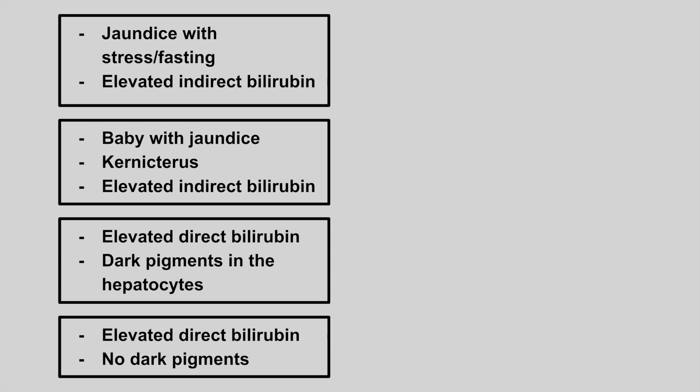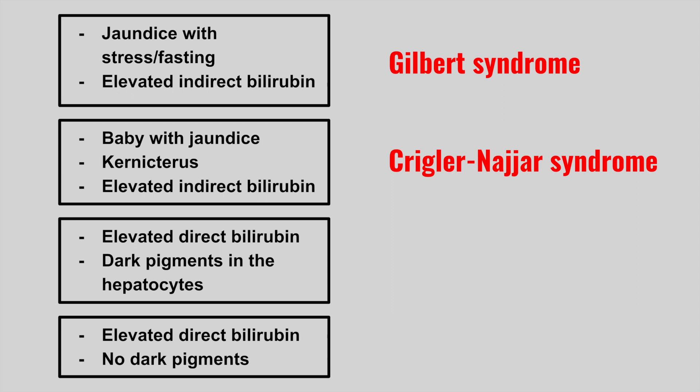The next patient has jaundice with stress or fasting and an elevated indirect bilirubin. This is Gilbert syndrome. The next patient is a baby with jaundice, kernicterus, and an elevated indirect bilirubin. This is Crigler-Najjar syndrome.